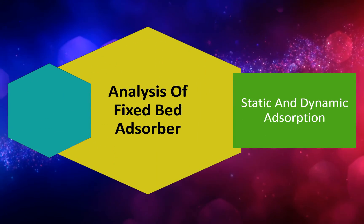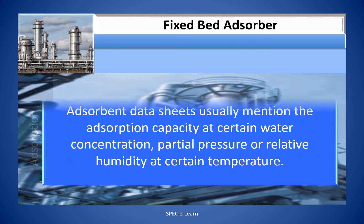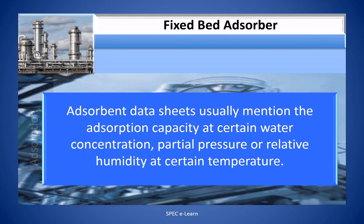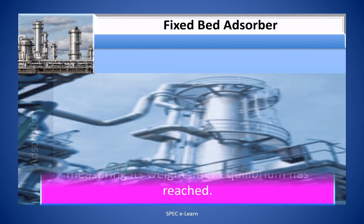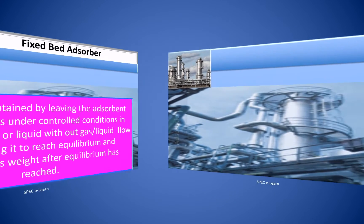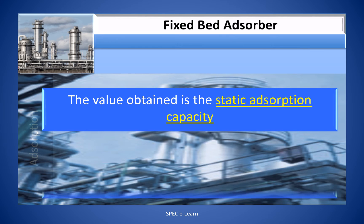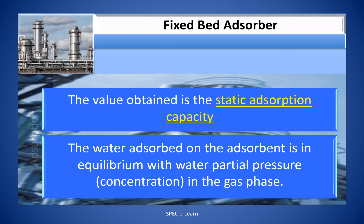Static and Dynamic Adsorption. Adsorption data sheets usually mention the adsorption capacity at certain water concentration, partial pressure, or relative humidity at a certain temperature. This value is obtained by leaving the adsorbent for several days under controlled conditions in contact with the gas or liquid without flow, allowing it to reach equilibrium, and measuring the weight after equilibrium has been reached. The value obtained is the static adsorption capacity. The water adsorbed on the adsorbent is in equilibrium with the water partial pressure or concentration in the gas phase.